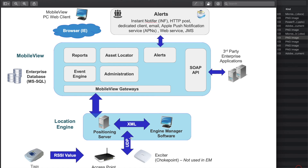In the foundation architecture, RSSI values come in from the tags to the access points, then are deposited with the positioning server and engine manager software, which also communicates into the gateways. From the gateways you get alerts via instant notifier, HTTP POST, and all data is stored in a SQL database. There is also a SOAP-based API enabling integration into third-party applications — a key feature we'll dive into in an upcoming episode. While SOAP is an older API technology, it provides tremendous access to data points, allowing MobileView to function not only as an asset management tool but as a middleware platform for building out different solutions.